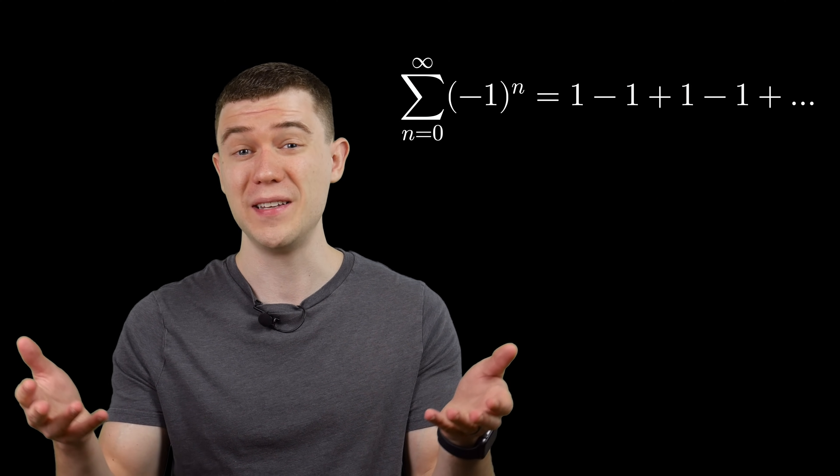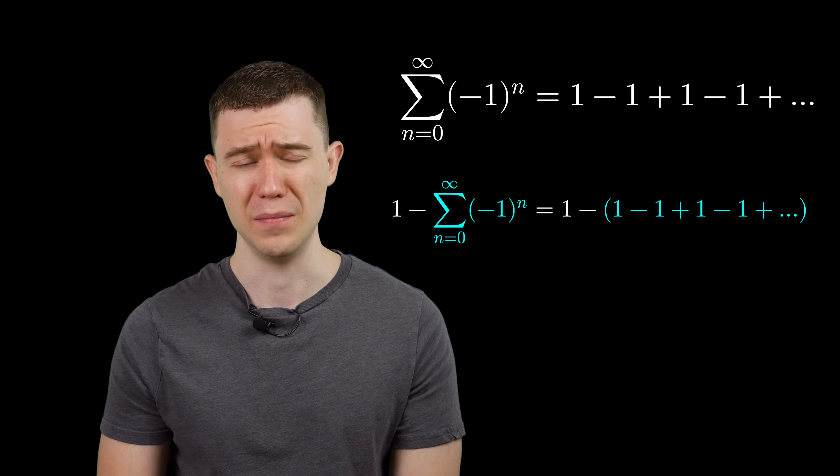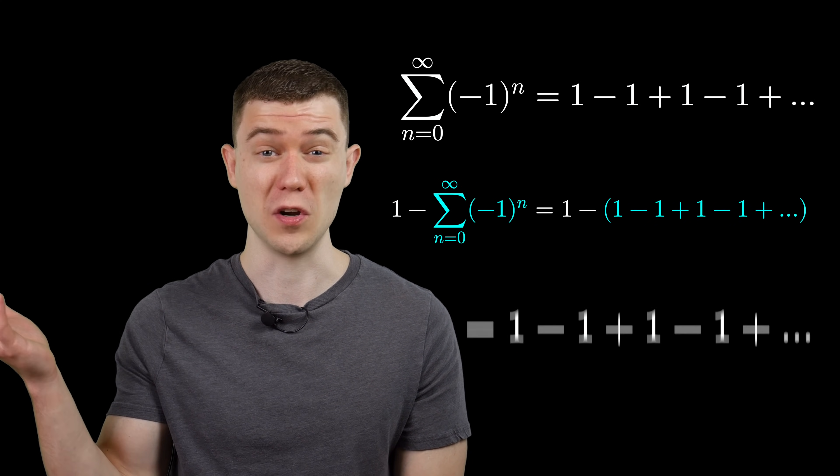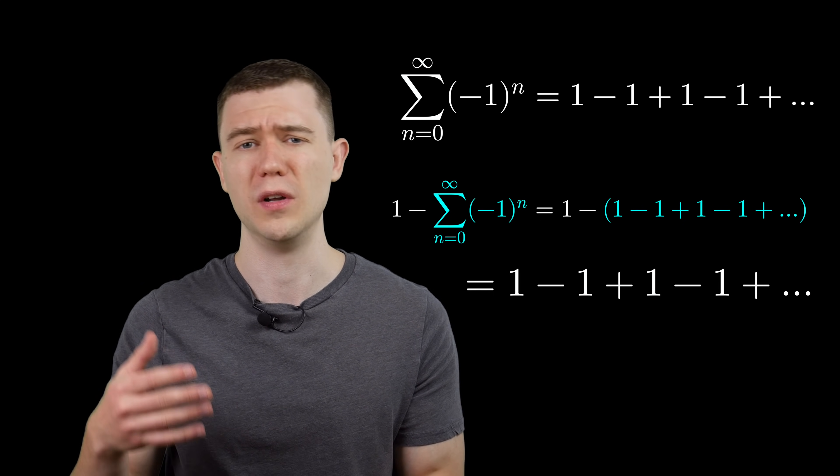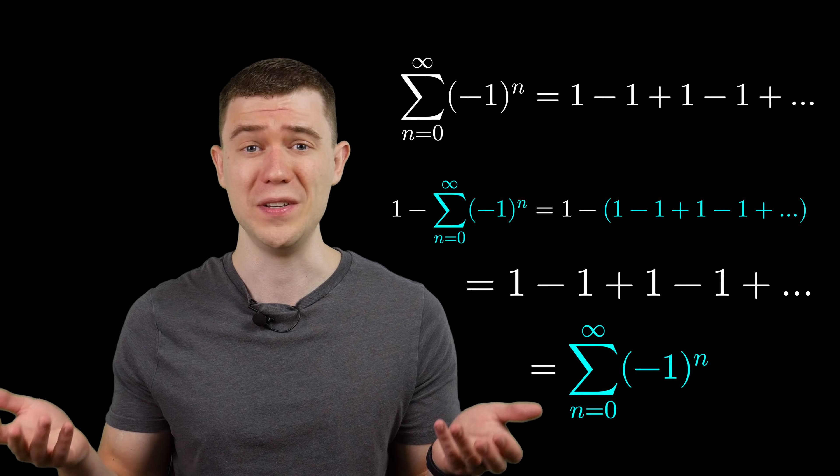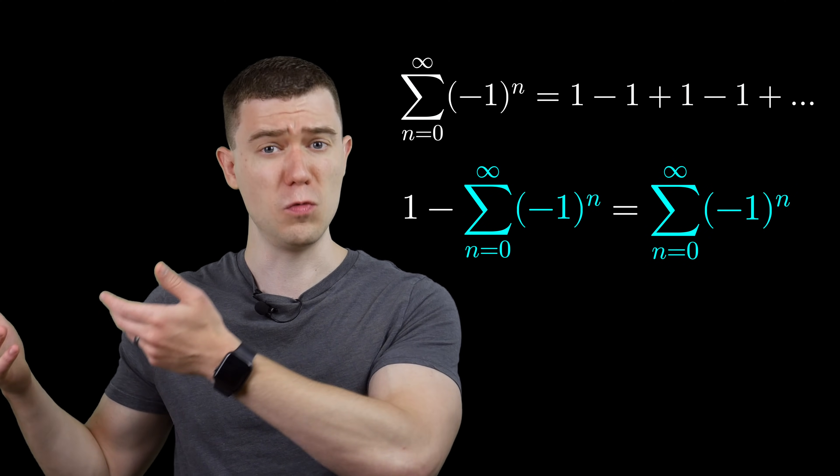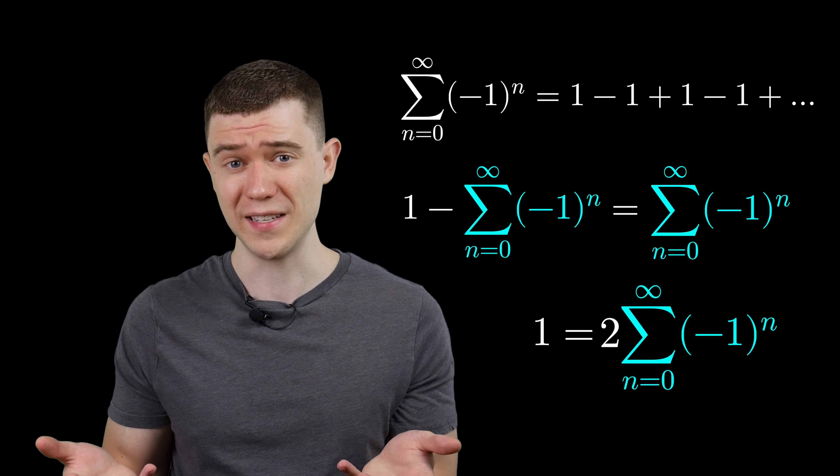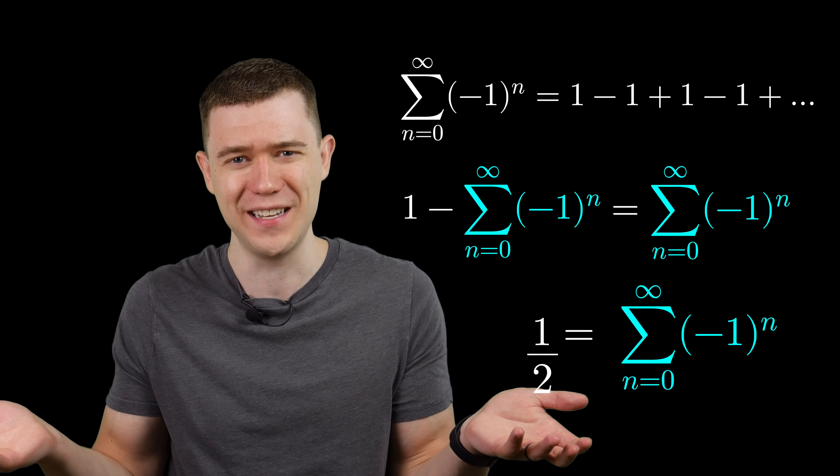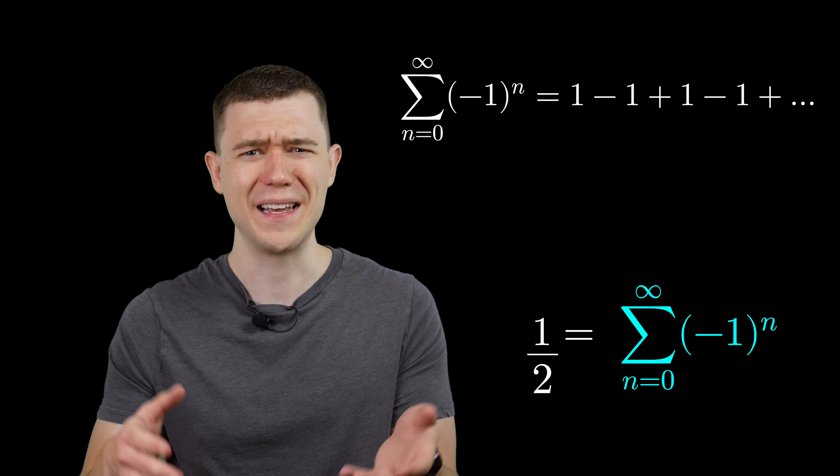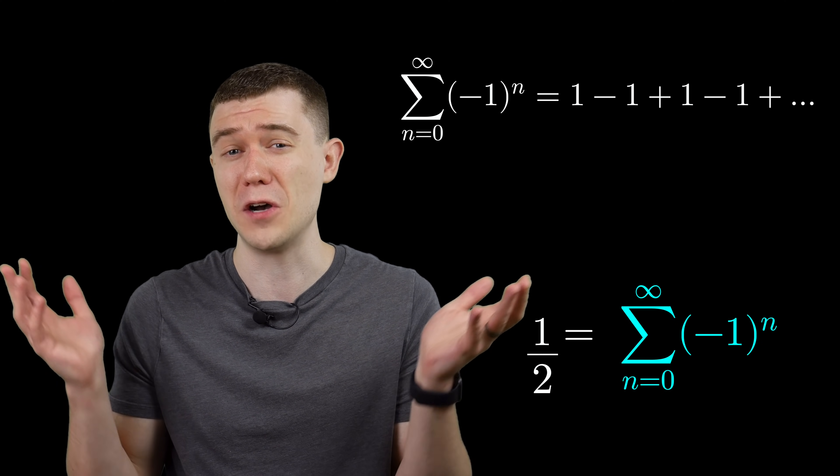The next unrigorous method tries to use the distributive law. Just do one minus this sum and distribute. You would basically distribute the negative, and so we would end up getting one minus one plus one minus one. That's just the original sum we started with. And so, one minus the sum equals the sum? Or one equals twice the sum? And the sum is one half? Like, no way, that's totally ridiculous. Adding and subtracting a bunch of ones to get a half makes no intuitive sense, and I was about to write this off as a fluke.